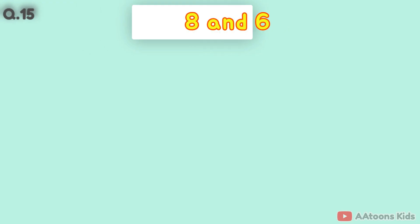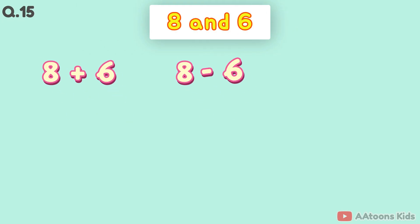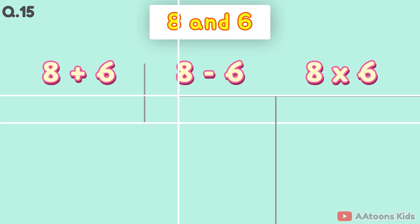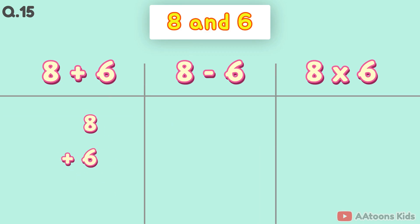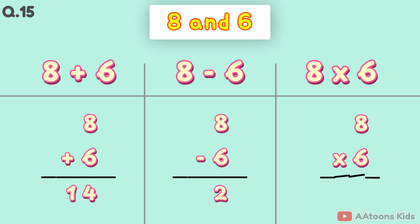The two numbers are 8 and 6. 8 plus 6 is 14. 8 minus 6 is 2. 8 times 6 is 48.